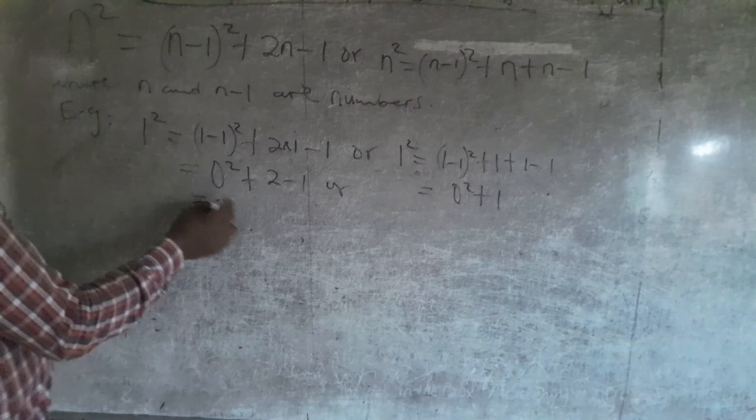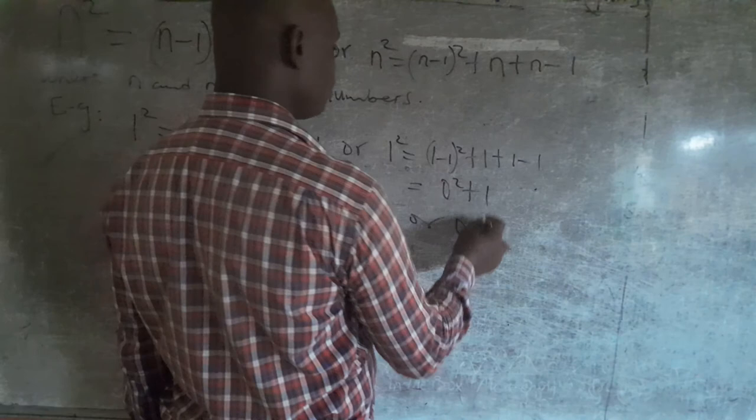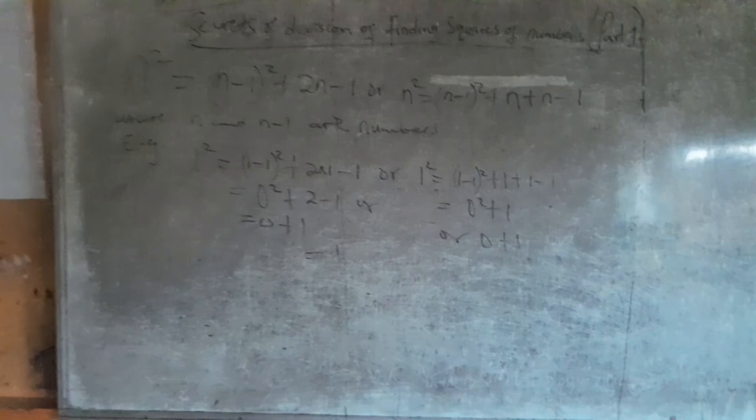So if you check this one, 0² is 0, 2 minus 1 is 1. Or 0² is 0, then plus 1. So the answer to both squares is 1.